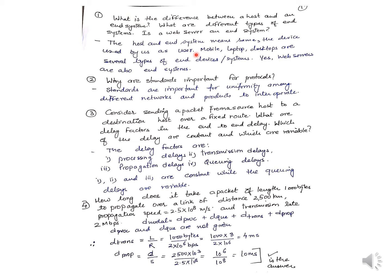The second question is: what are standards and why are they important for protocols? Standards are important for uniformity among different networks and products to interoperate. If we have different protocols for different types of networks and machines — for example, a Windows desktop and an Apple desktop — there would be compatibility problems. That's why protocols have standards that must be followed when setting up a network.